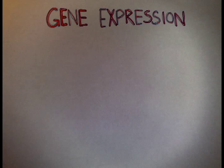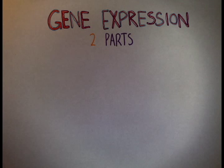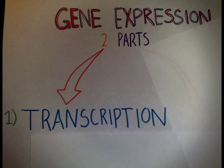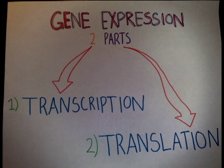Gene expression, the production of a protein, consists of two main processes. The first being transcription, when DNA's genetic information is transferred to RNA, and the second being translation, when the RNA transcript specifies the sequence of amino acids in a polypeptide.